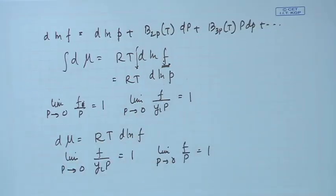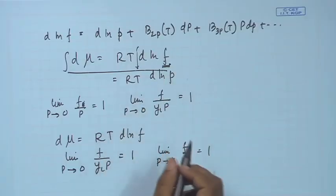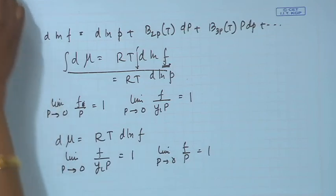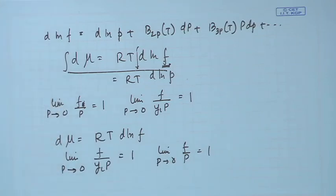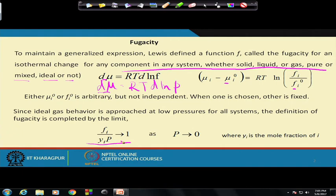We need a straightforward way to define and calculate fugacity. Importantly, the equation dμ = RT d ln f is applicable for solids, liquids, and gases — pure or mixed, ideal or non-ideal — everywhere. The power of the definition of fugacity lies in the fact that we can define it for any component in any system, and the limiting condition proposed here holds throughout. We are thereby able to use whatever thermodynamic functions we have developed for ideal gases.